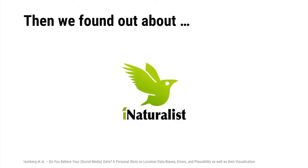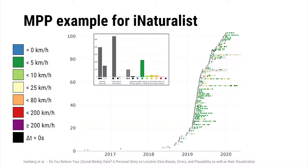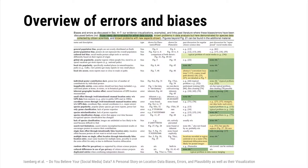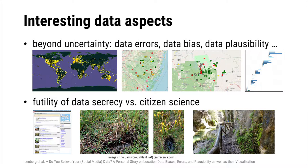We also found a service called iNaturalist that collects species data specifically from citizen science, and we created the motion plausibility profile for those cases as well. Comparing the different datasets, iNaturalist is more prevalent in Eastern Europe and Asia than Flickr and Panoramio. To conclude, our paper shows that we must look beyond uncertainty and examine errors, biases, and plausibility of data rather than just visualizing uncertainty. Data secrecy is also quite futile, as we have seen, because the power of citizen science and other approaches can reveal information anyway.